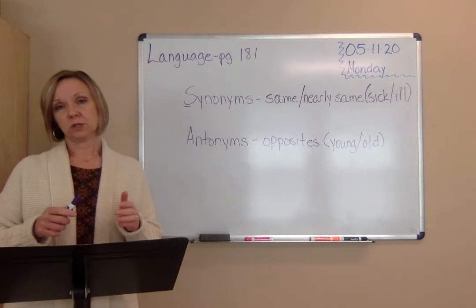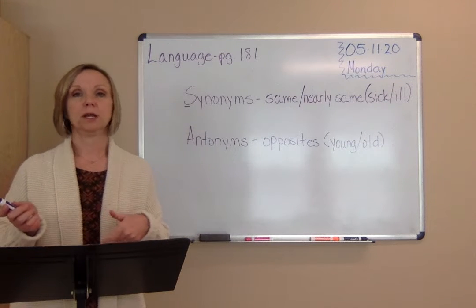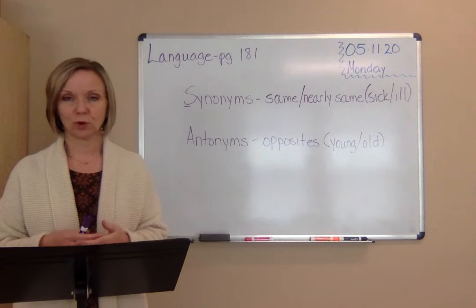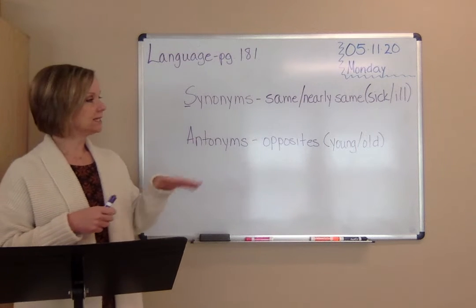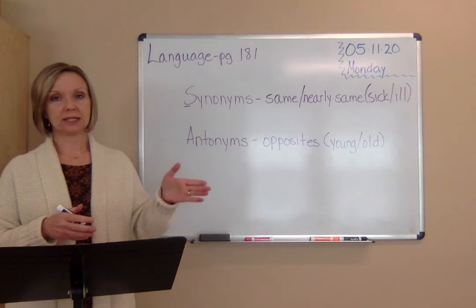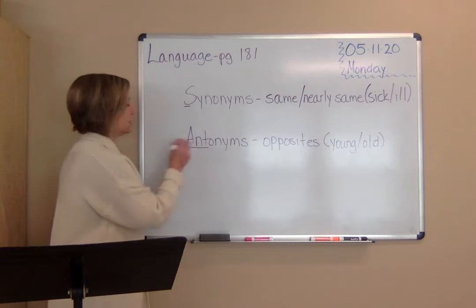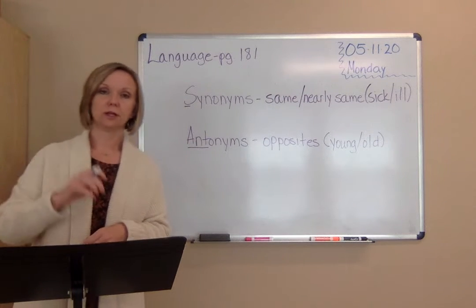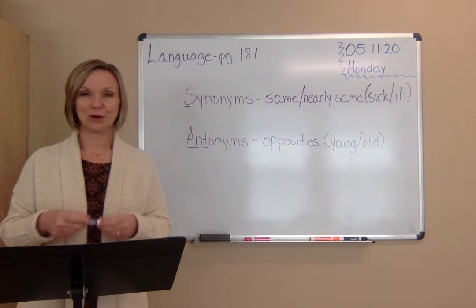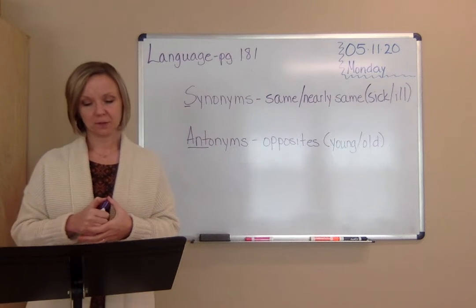She was happy when we ate ice cream, she was happy to go to the park, she was happy when her puppy came home — so you can use a different word, a synonym. Antonyms are opposites. We remember antonym by the first part of the word, ant. Ants are small and we are large. My example is young and old — opposites.